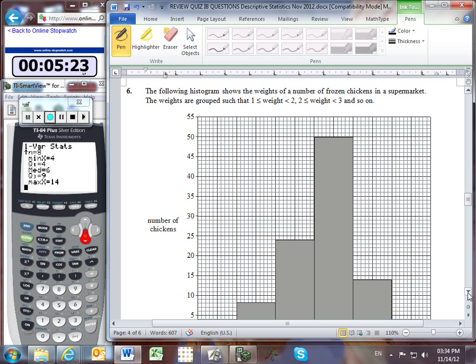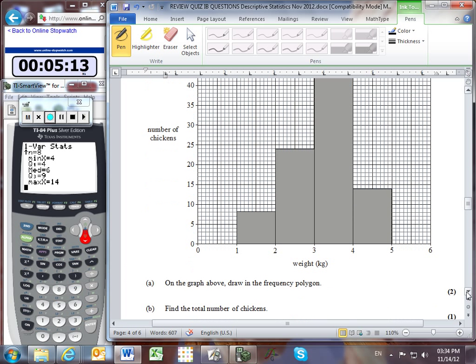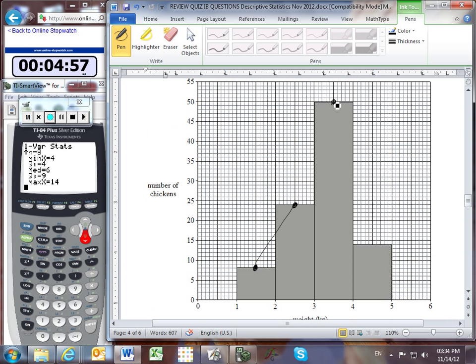Problem 6: histogram showing weights of frozen chickens in a supermarket. Weights between 1 and 2, 2 and 3, done continuously with no gaps between bars. Drawing the frequency polygon by taking the middle value at the top of each bar and connecting them with straight lines.